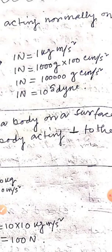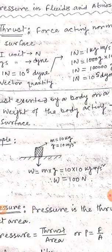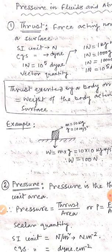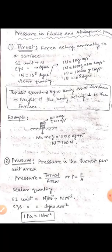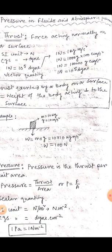The SI unit of thrust is Newton, and in CGS it is dyne — that is gram centimeter per second square — and it is a vector quantity. There are two more gravitational units. The gravitational unit of thrust in the MKS system is kgf (kilogram force) and in CGS system it is gf (gram force). The relation is: 1 kgf = 9.8 Newton, and 1 gf = 980 dyne. The thrust exerted by a body on a surface is equal to the weight of the body, and the weight of the body always acts perpendicular to the surface.